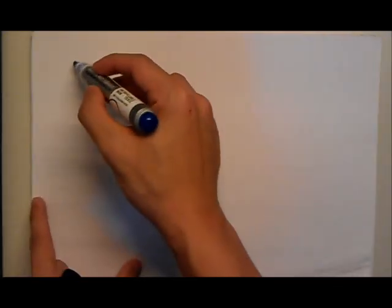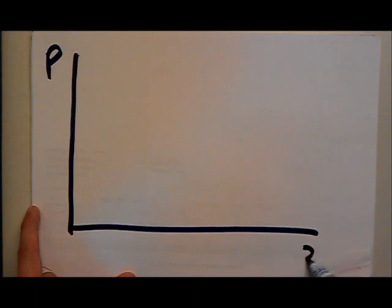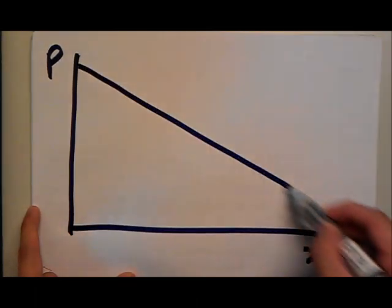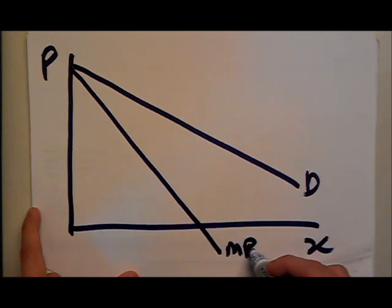So let's take a look at the graph first. It looks like this: y-axis is price, x-axis is quantity, my demand curve going this way, and my marginal revenue which is two times steeper than my demand curve.